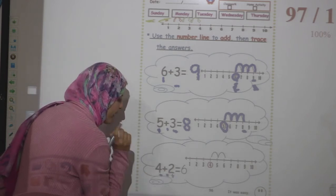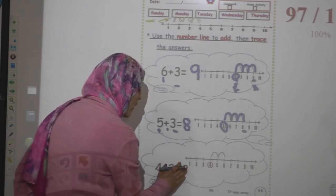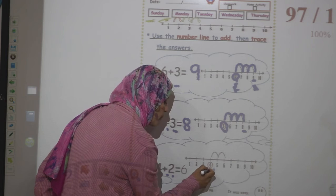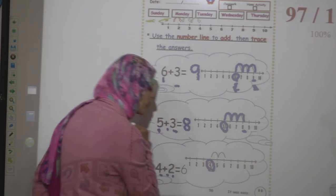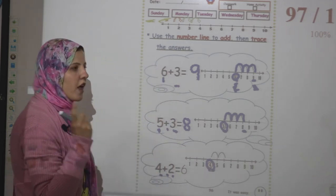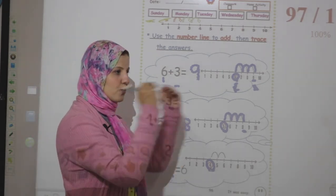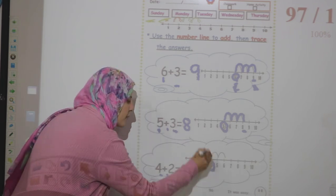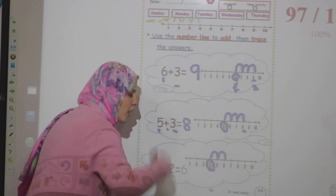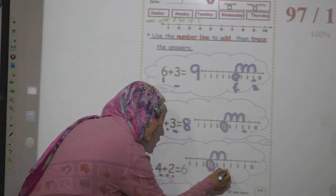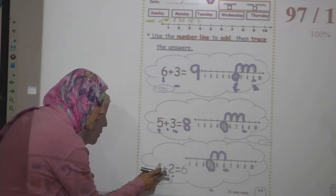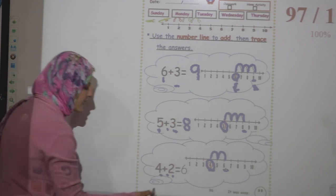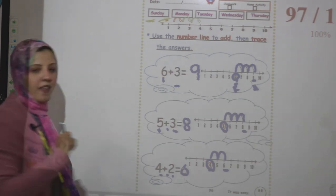Let's see another example: 4 plus 2. Where is number 4 here in the number line? This is number 4. I stop on number 4. Then 4 plus 2 — I have to jump 2 times. On the number line: 1, 2. I stop on number 6. Then 4 plus 2 equals 6. How do we write number 6? Bending stick and semicircle. Okay, thank you for watching.